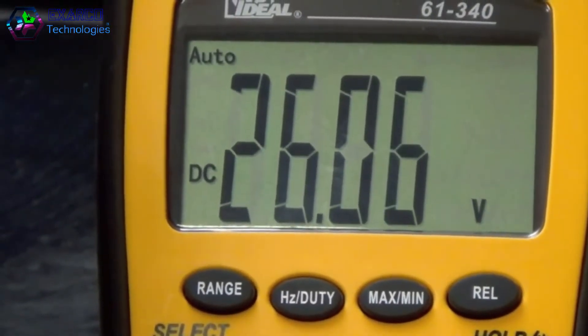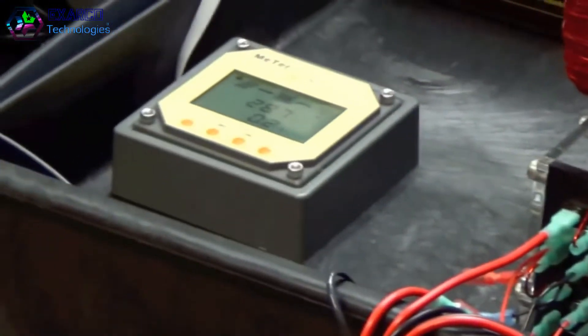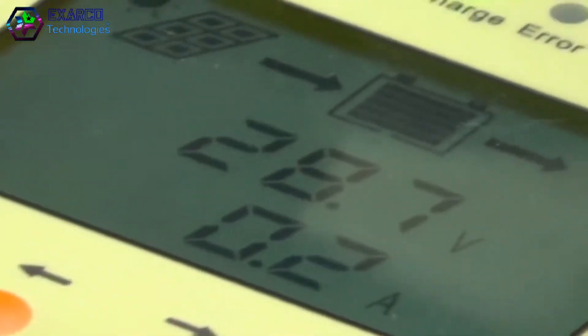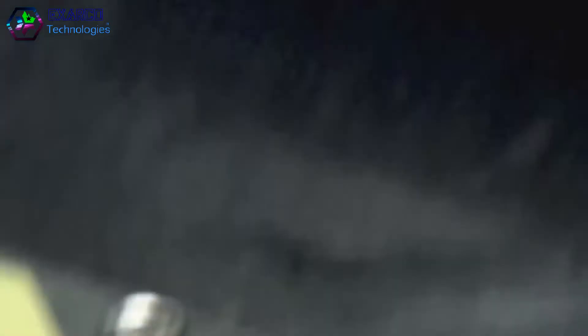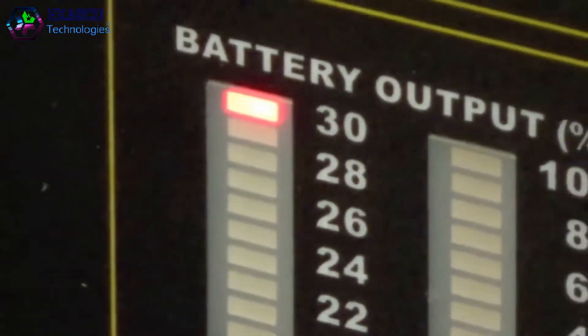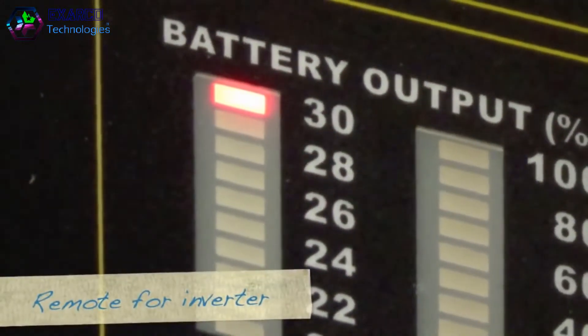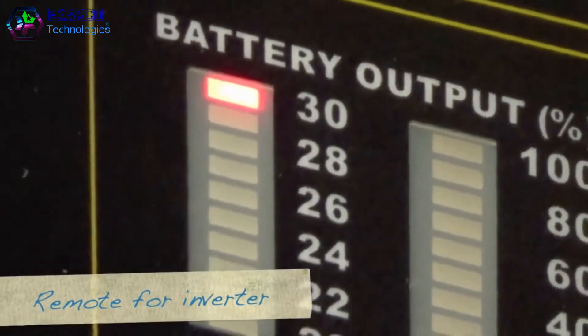And over here the other bank from the solar is 28, well 29 volts, and this only goes to 30, so the light turns red from green to red when you're at the high level like that.